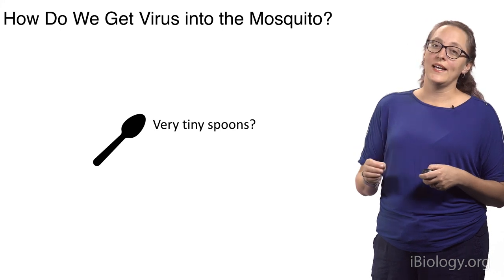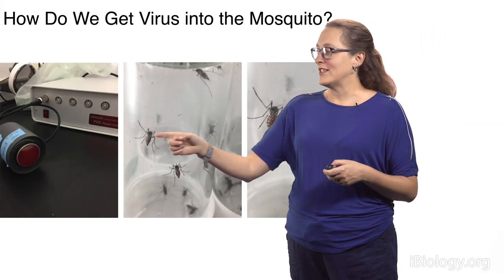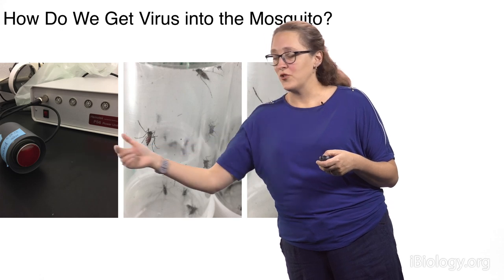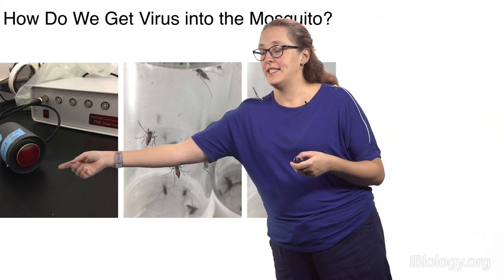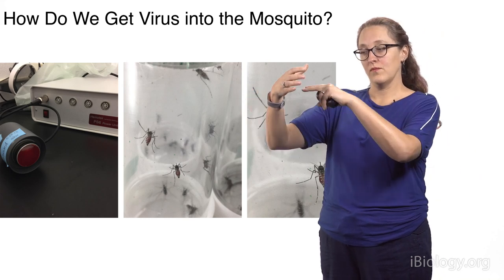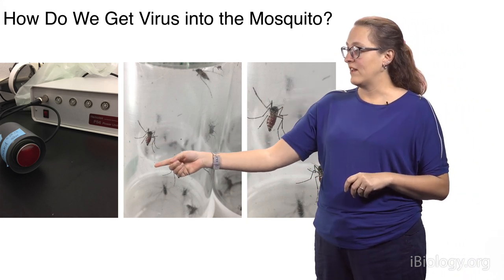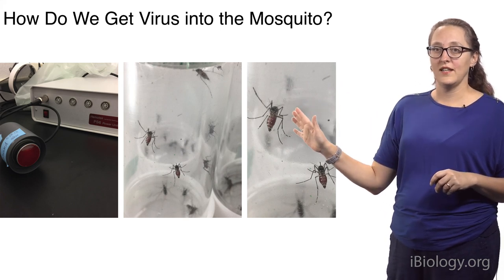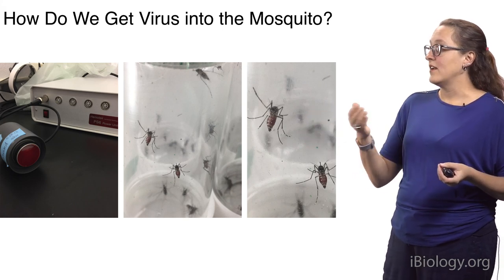Physically, how do we get the virus into the mosquito? We use something called a Hemotek — the best invention ever, from Discovery Labs in the United Kingdom. It's basically an artificial membrane feeding system where we put blood into a little disc with a membrane on the bottom to hold the blood in, heated to 37 degrees Celsius — approximately body temperature. We stick it on top of a carton full of mosquitoes; they probe through the screen to the blood meal and get big and fat and red. We then take those mosquitoes and put them into a new carton, knowing they've been exposed to whatever we want them to have, and we can now study vector competence.